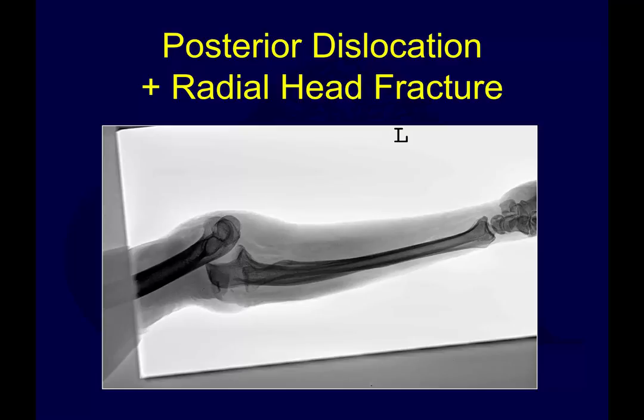Traumatic elbow instability — this is Part 2 of our lecture from the Orthopedic Trauma Association Core Curriculum Version 4 Lecture Series by Dr. David Ring. I'm Sakim Rahman, narrating the slides. In our first video we went through assessment and distinguished between simple and complex elbow dislocations. Now we're going to focus more on complex elbow dislocations, or the so-called fracture dislocations, particularly radial head and coronoid.